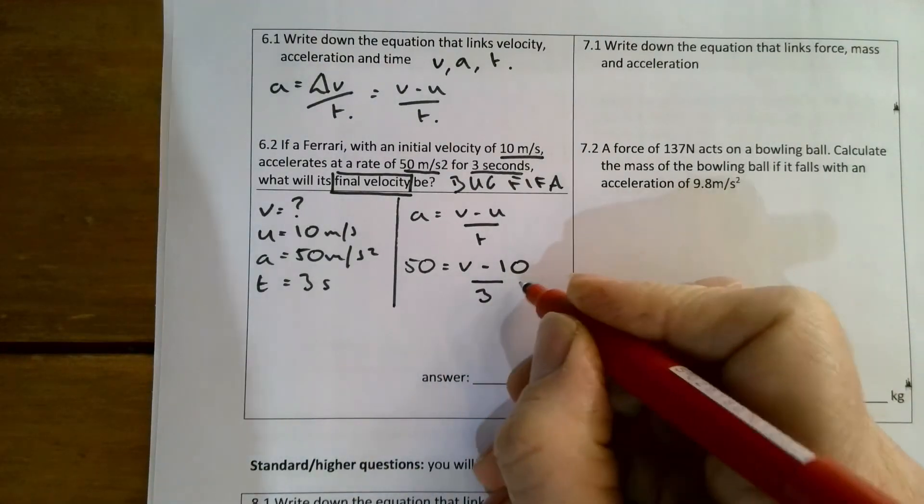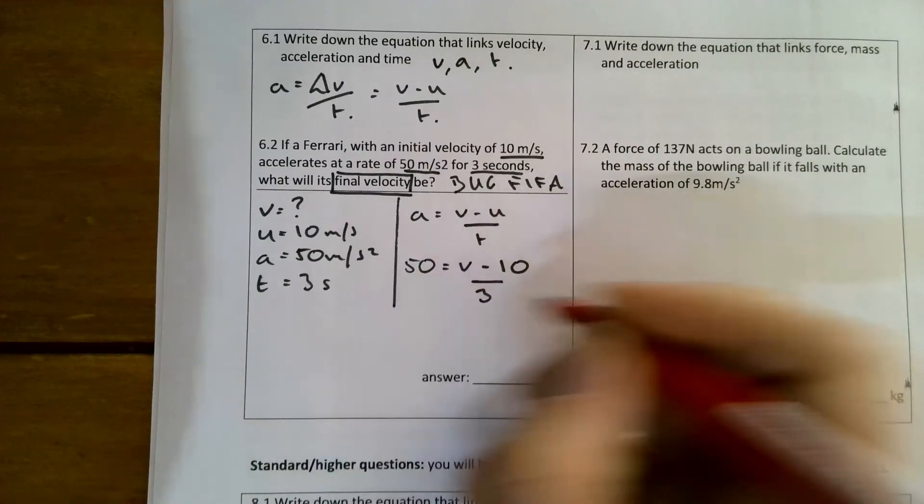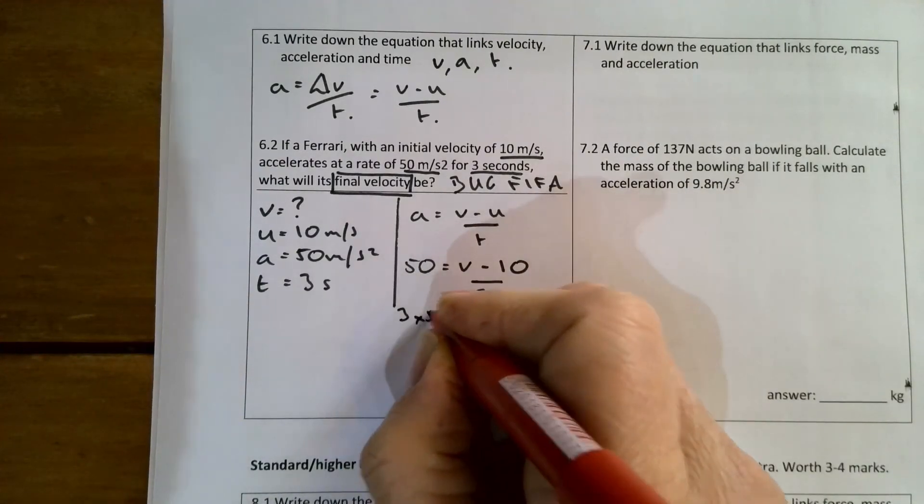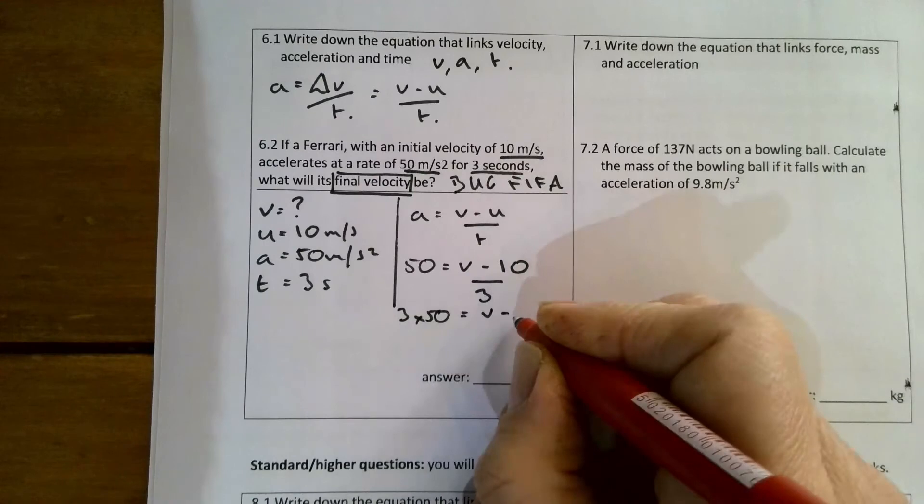I'll get rid of three on the right-hand side, and that will leave 3 times 50 equals v minus 10.